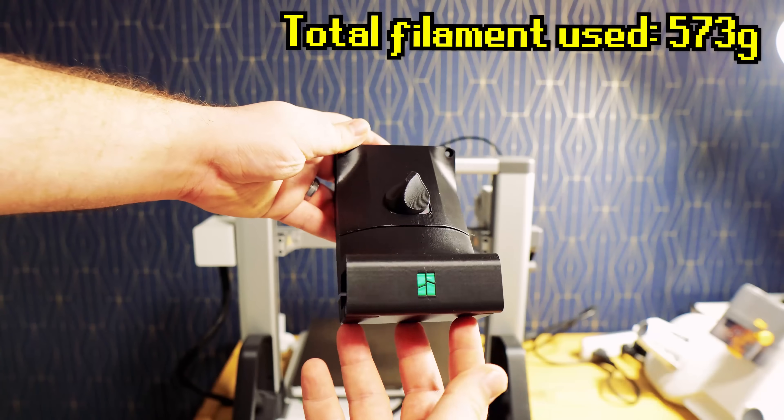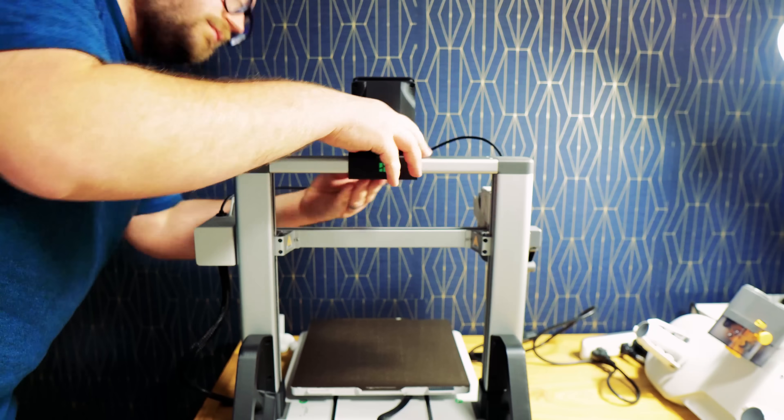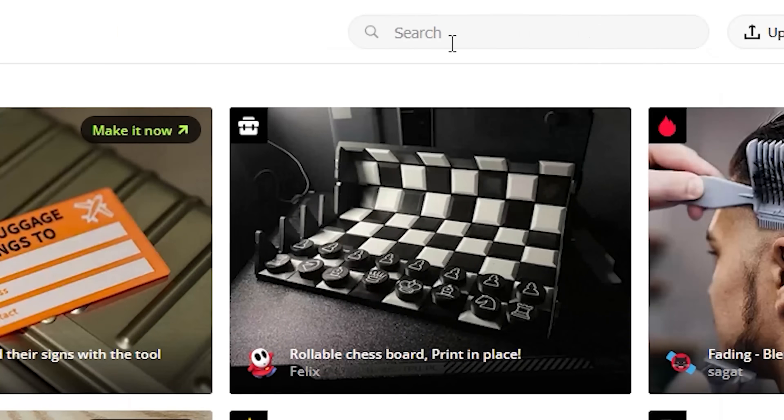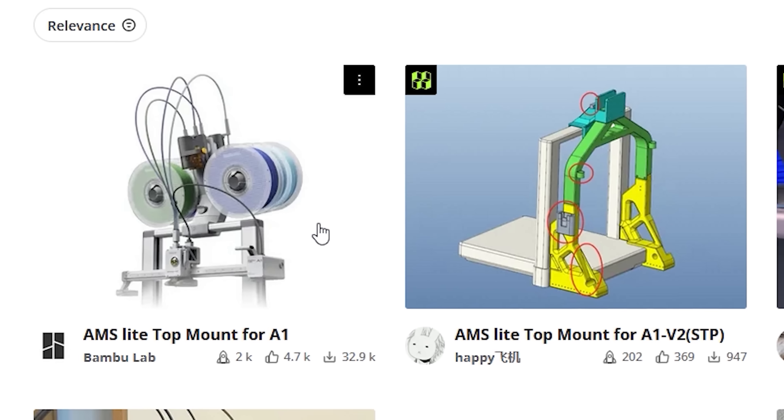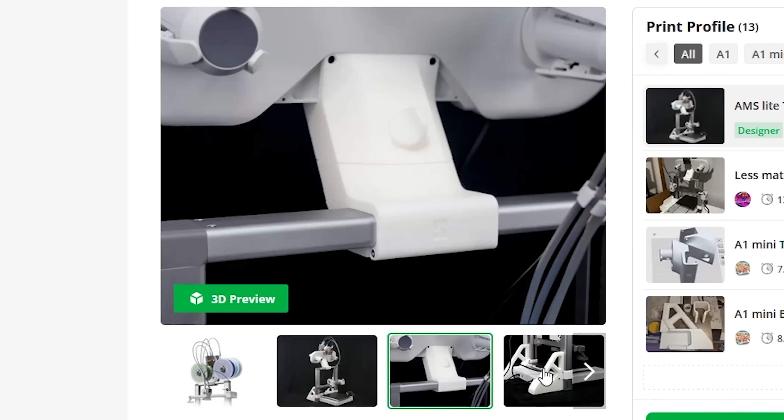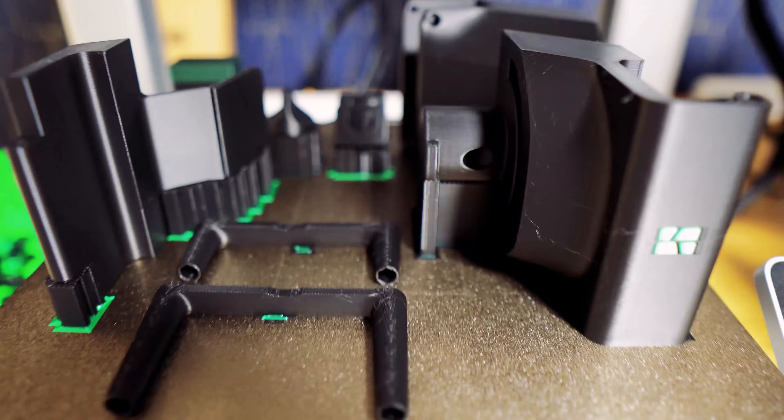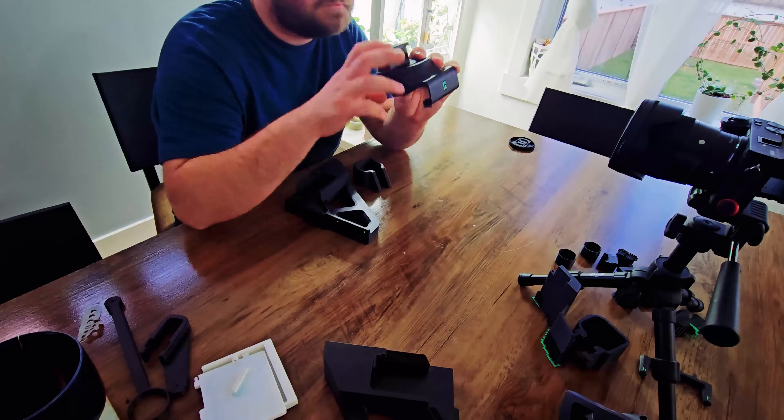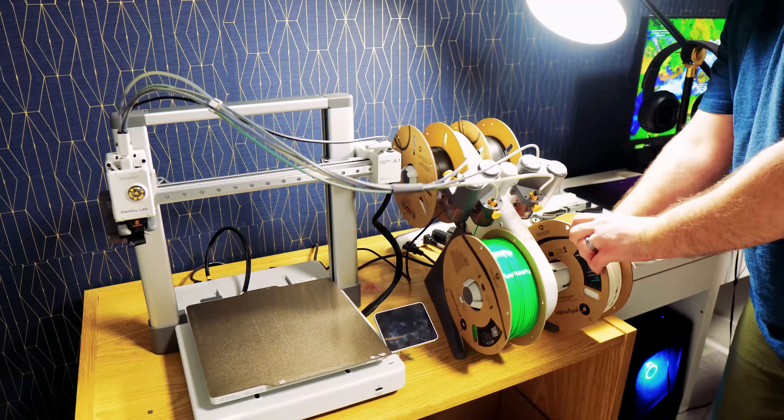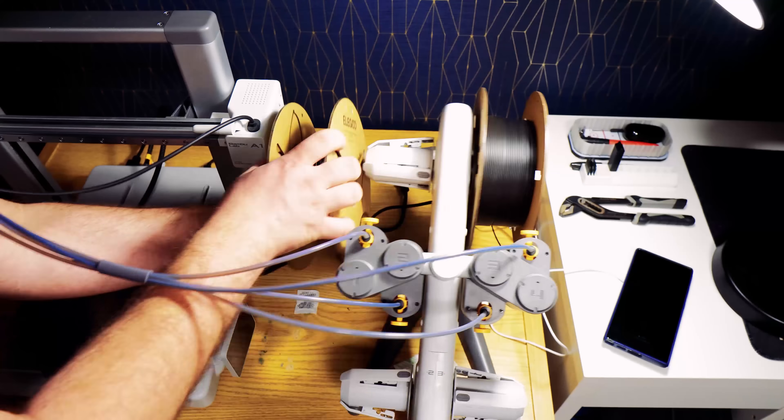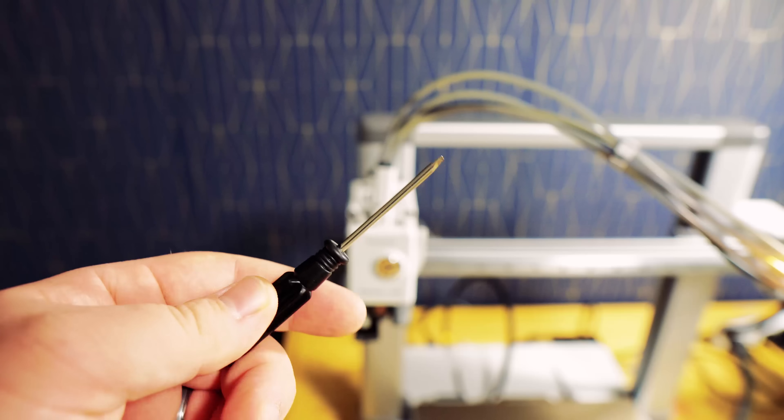Up first we have a mod that is designed by Bamboo Labs themselves. This is a top mount AMS mod that allows you to set your spools above your A1, saving space by getting rid of the AMS stand. I will showcase how to install this mod. If at any point you'd like to skip to the next mod within the video, all the mods are timestamped and can be found in the description or the comment section.